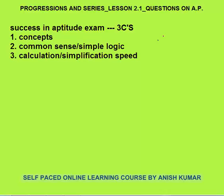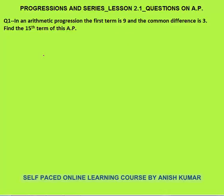Let's solve questions on AP. I will first discuss easy questions, then slowly the level of difficulty will rise. First question: in an AP the first term is 9, so a = 9, and the common difference is 3, that is d = 3.